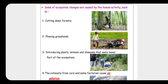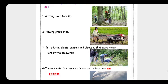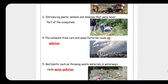Number two: plowing grassland, which means not caring for the soil so the soil becomes poor and can't give us crops. Number three: introducing plants and animals that were never part of the ecosystem — they will not survive in this new ecosystem.